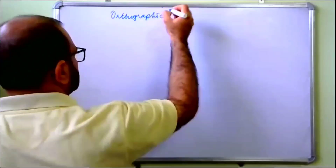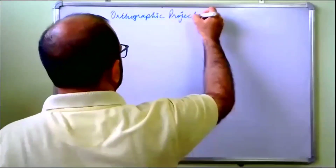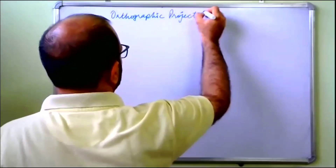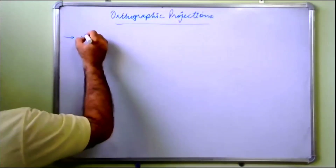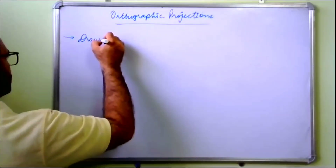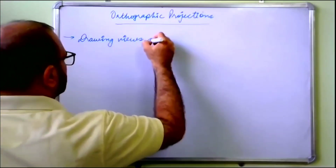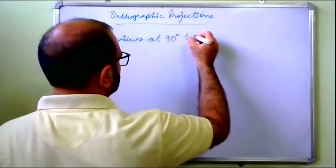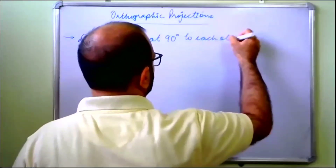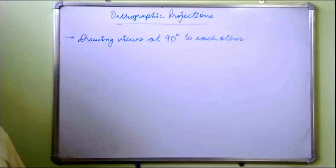Orthographic projections — basically, orthographic projection means drawing views at 90 degrees to each other. Whenever we are drawing views at 90 degrees to each other, we call those orthographic projections.